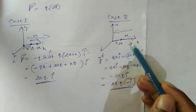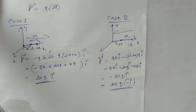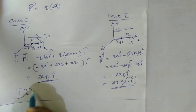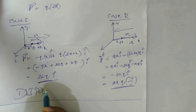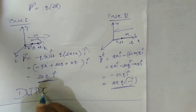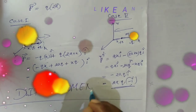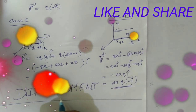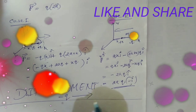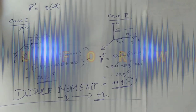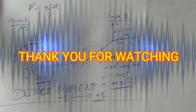The result -2aqî means the dipole moment points in the negative x direction, which again is from the negative charge (-q) toward the positive charge (+q). We conclude that the dipole moment is always directed from minus q to plus q. That is the mathematical expression we discussed today — kindly subscribe and like the videos, thank you.